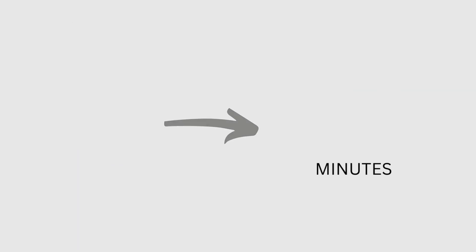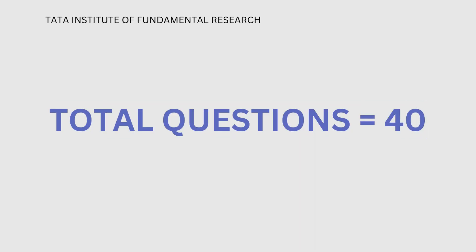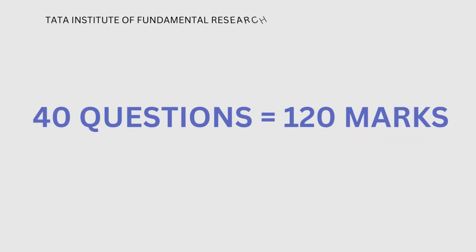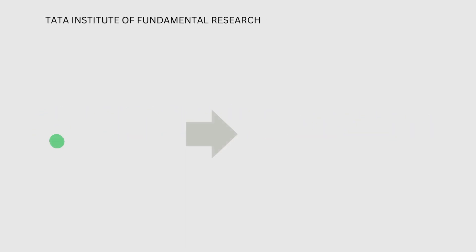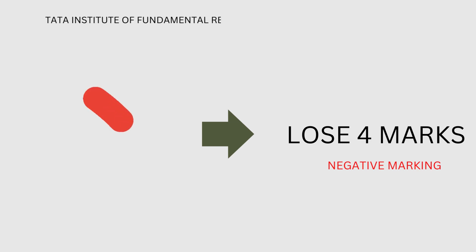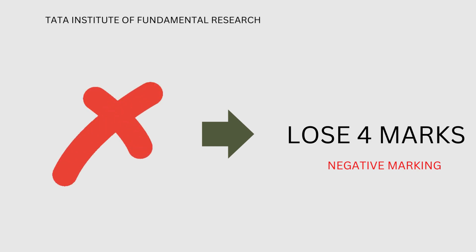The paper carries a total number of 40 questions, in which each question carries a weightage of three marks, so the total weightage of this paper is 120 marks. If you answer one question correctly then you will get three marks, but if you answer it incorrectly then you'll lose one mark — it means there is negative marking for wrongly answered questions.